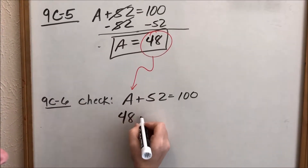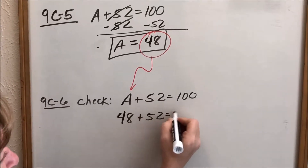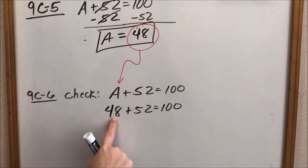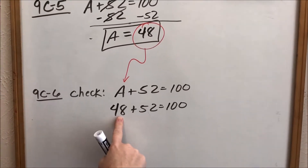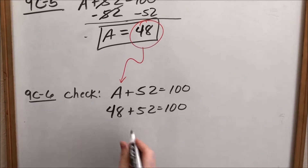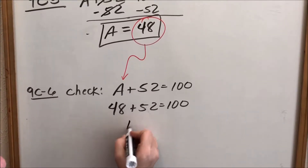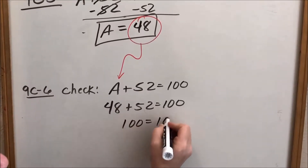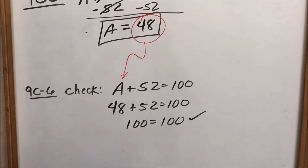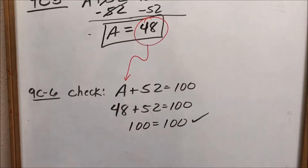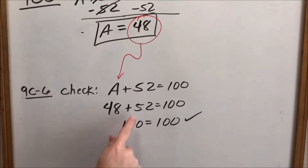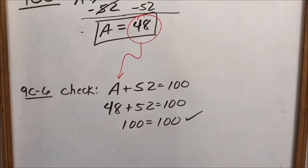I write 48 plus 52 equals 100. If you had the right solution — if A really is 48 — then the left side of the equation will equal the right side. Well, 48 plus 52 is 100, and the left side equals the right side. I usually just say 'check' — it checks. If this does not check, either you got the wrong solution for A, or you did your arithmetic wrong in your checking.